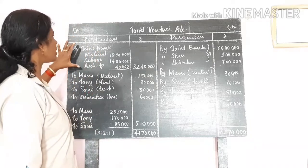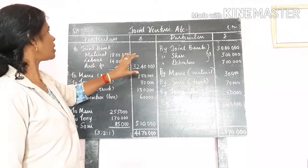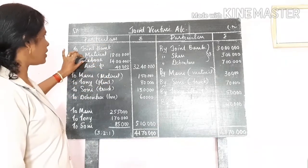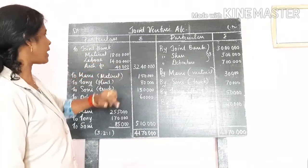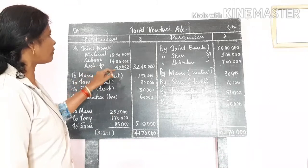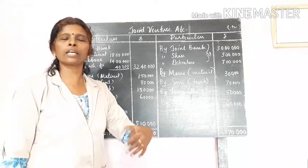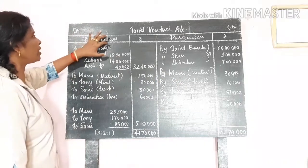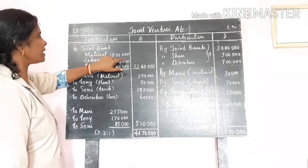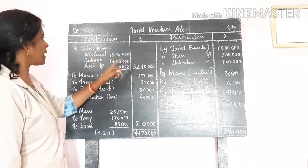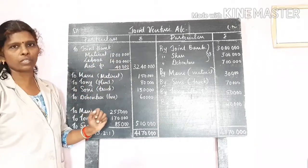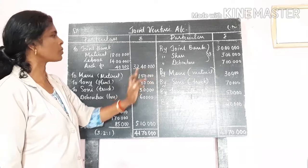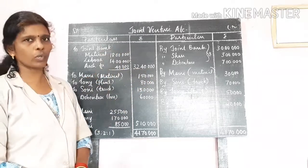Let's start opening the joint venture account. In the joint venture business, they bought materials for Rs. 18 lakhs. They gave labour charges for Rs. 14 lakhs. Then, architect's fee for Rs. 40,000. These are the three expenses formally spent. That is why they are debited to joint bank account — materials Rs. 18 lakhs, labour Rs. 14 lakhs, architect's fee Rs. 40,000.